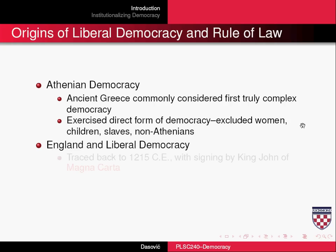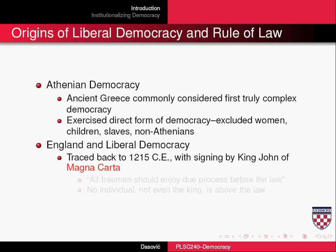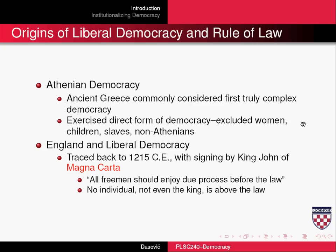Then we have England and the rise of liberal democracy, which is traced back to a fundamental event: the signing by King John of the Magna Carta in 1215. The key idea behind the Magna Carta was that all freemen, or all citizens, should enjoy due process before the law. In other words, no individual — not even the king — was above the law. This established the importance of the rule of law, which you saw in the Diamond and Morlino reading.